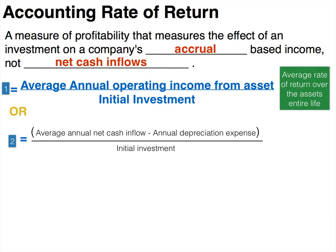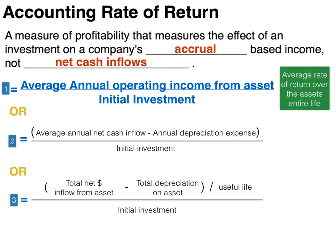The third form again changes the numerator. Take the total net cash inflows from the asset, subtract total depreciation on the asset, and divide that sum by the useful life — all of that is the numerator. You still need to divide that by the initial investment.